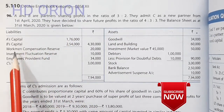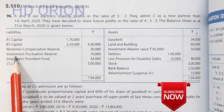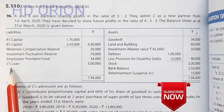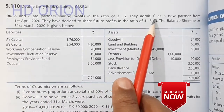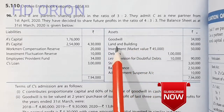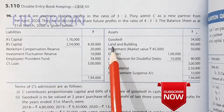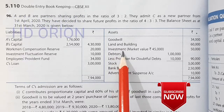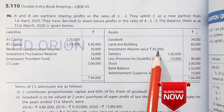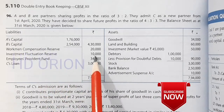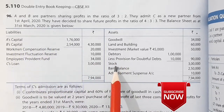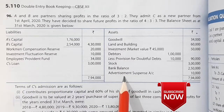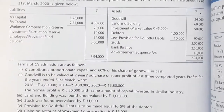On the liabilities side: capitals, workman compensation reserve, investment fluctuation reserve, and employees provident fund are given, together with C's loan. C is the same person who is joining the firm as a new partner. On the asset side: goodwill, land and building, investments — market value has decreased by 5,000, so it will be adjusted against this reserve. Then debtors less provisions, stock, bank balance, and advertisement suspense.